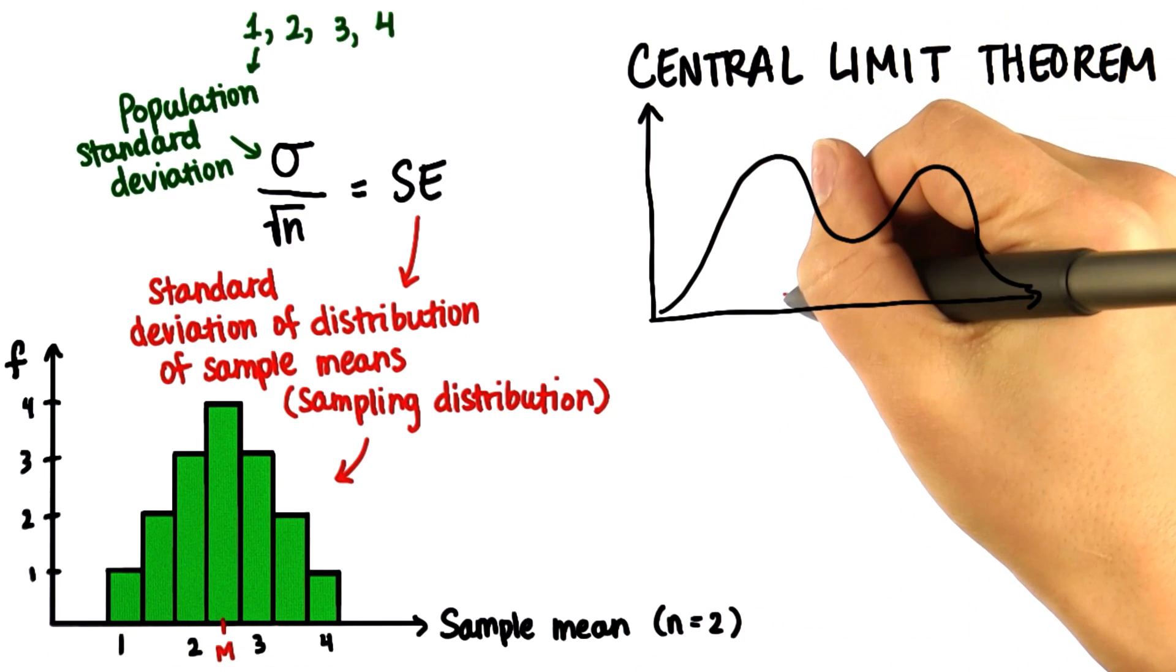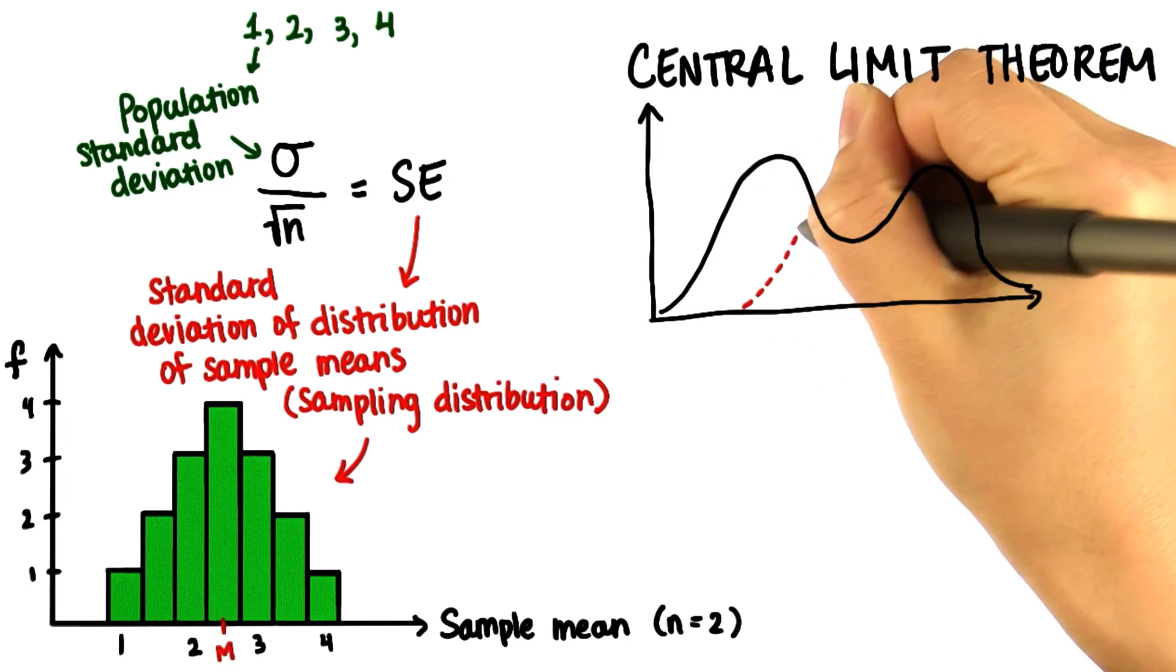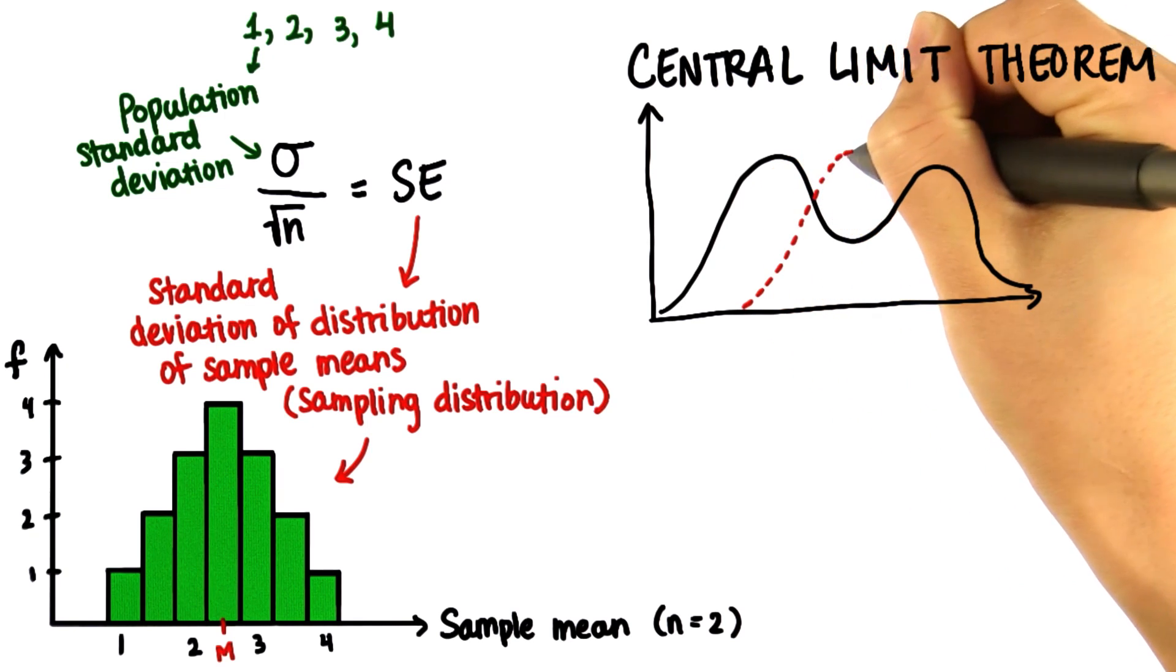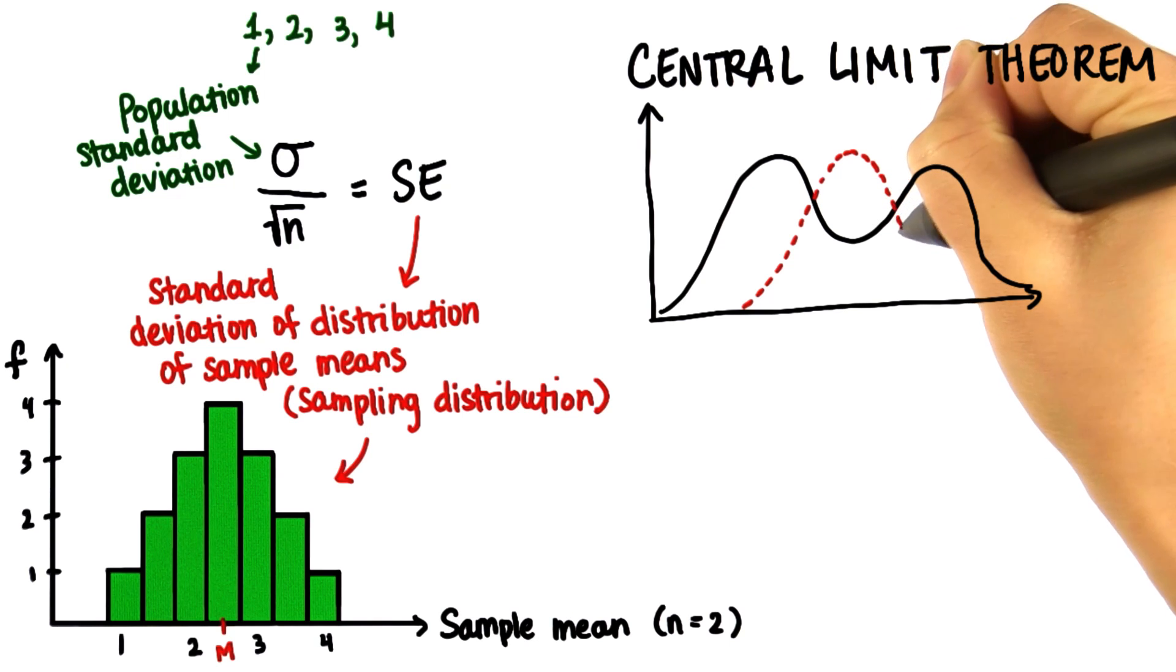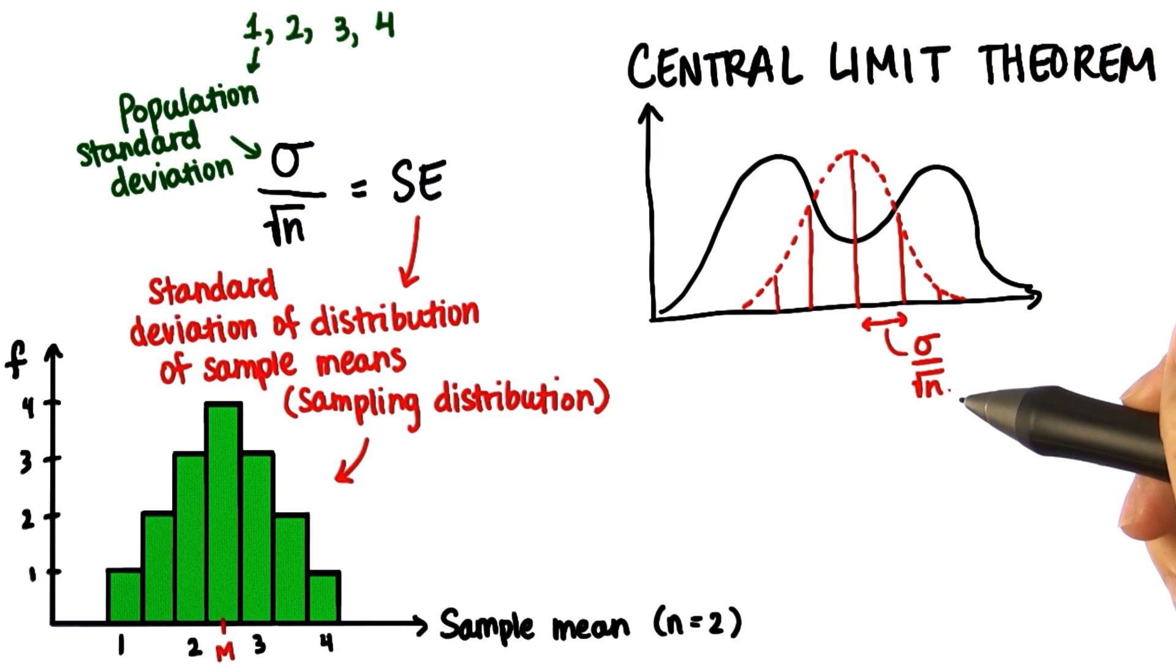Assuming the sample size is large enough, if we plot the distribution of means, we're going to get something that's relatively normal, with a standard deviation equal to the population standard deviation divided by the square root of the sample size.